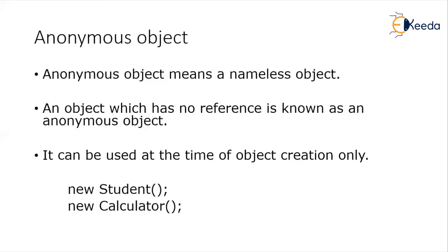When should we use anonymous objects? Whenever there is no reusability of the object. For example, if there is a class with methods and I need to call those methods after object creation, I will create a reference to hold the object. But when I just need to create an object only once and it is not going to be reused, in that case we can create anonymous objects. This is all about the additional part related to objects. Thank you.